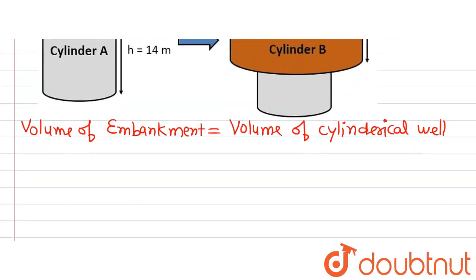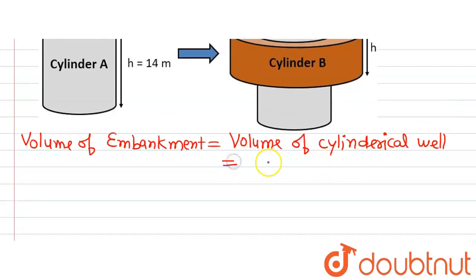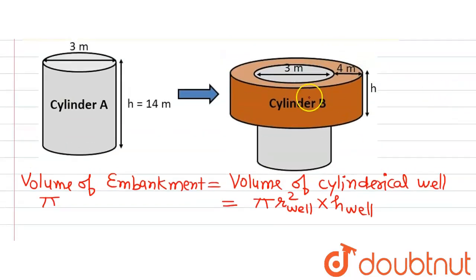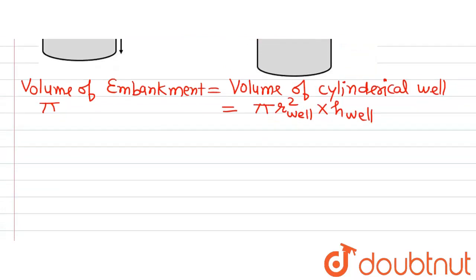Using the formula for the cylindrical well: volume of a cylinder is pi times radius squared times height. The volume of the embankment uses the hollow cylinder formula, since the embankment is a hollow cylinder with an outer cylinder and an inner cylinder. To find its volume, we subtract the volume of the inner cylinder from the outer cylinder, giving pi times (R_outer squared minus R_inner squared) times H, where H is the height of the embankment.